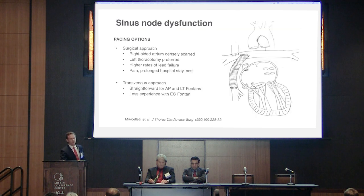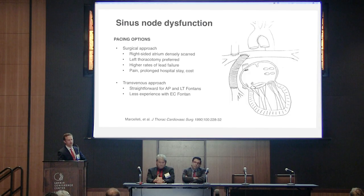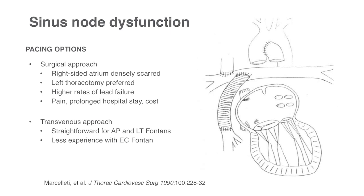So how do we pace these patients if they need pacing? The two major options are surgical and transvenous. The surgical approach is the conventional approach, but the limitations are that the right side of the pulmonary venous atrium tends to be densely scarred, leading to a higher rate of lead failure. A lot of times you need a left thoracotomy to get to viable atrial myocardium, with downsides including pain, prolonged hospital stay, and cost. The transvenous approach is what we usually use for patients further out from their Fontan — it is relatively straightforward for atrial pulmonary Fontans and lateral tunnel Fontans where you can get directly from the venous circuit into atrial myocardium. There's a lot less experience in the extracardiac Fontan because the conduit itself is an obstacle to getting to the atrial tissue from the venous system.